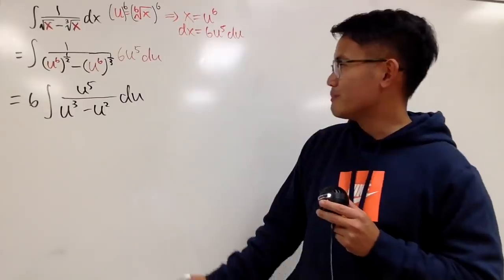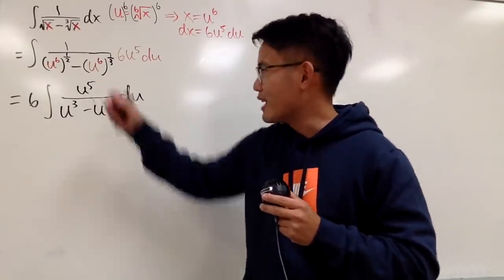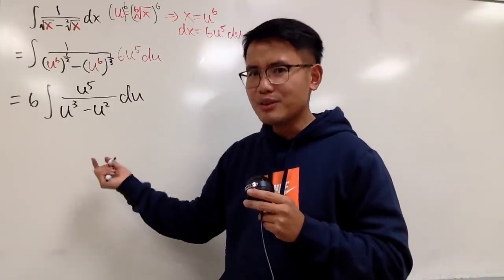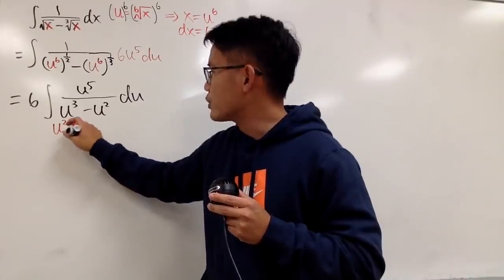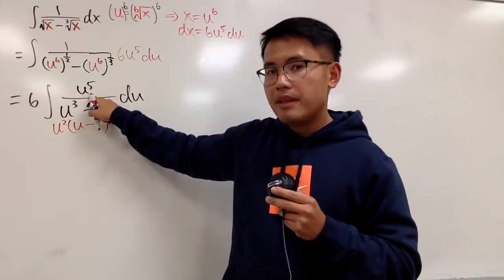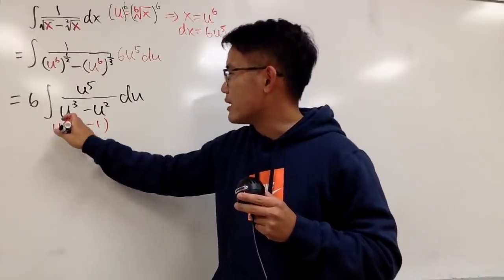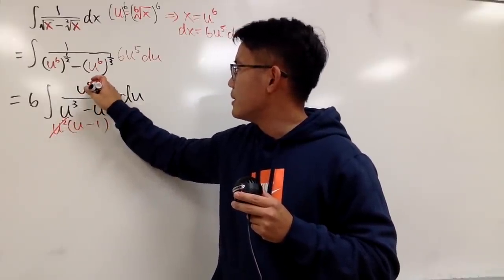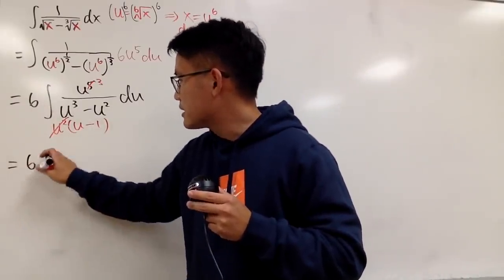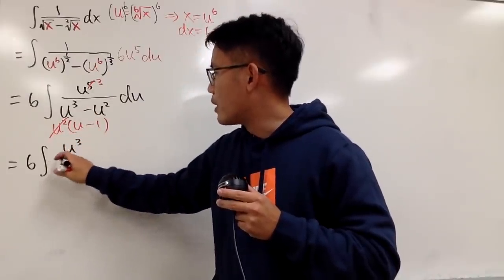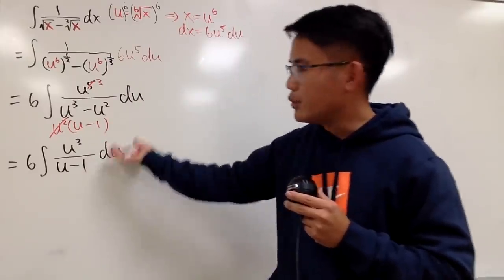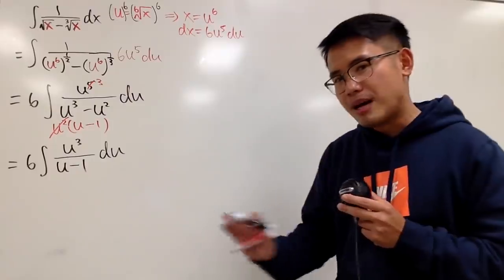Now I can factor things out and cancel. In the denominator, I can factor out u^2 and get u minus 1. On top we have u^5, and with u^2 in the denominator we can cancel, making the numerator u^3. So in other words, this is 6 times the integral of u^3 over (u minus 1) du. Okay, this is not that bad at all.